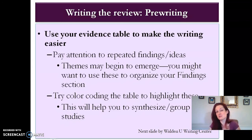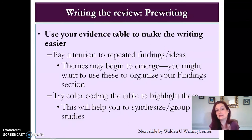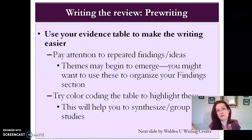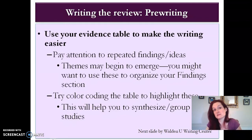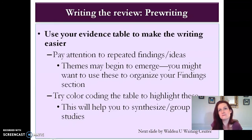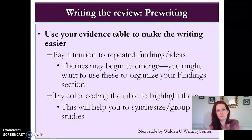Similarly, when you get to your discussion section and talk about the implications of all these studies, you can look down the implications column and themes will start to emerge. When you go down the limitations column, you'll see very easily if there are common limitations to this body of evidence — for example, maybe 15 studies all had small sample sizes, or participant demographics were really limited, or settings were not ideal. Looking down that column makes it so much easier. It does a lot of the work for you.